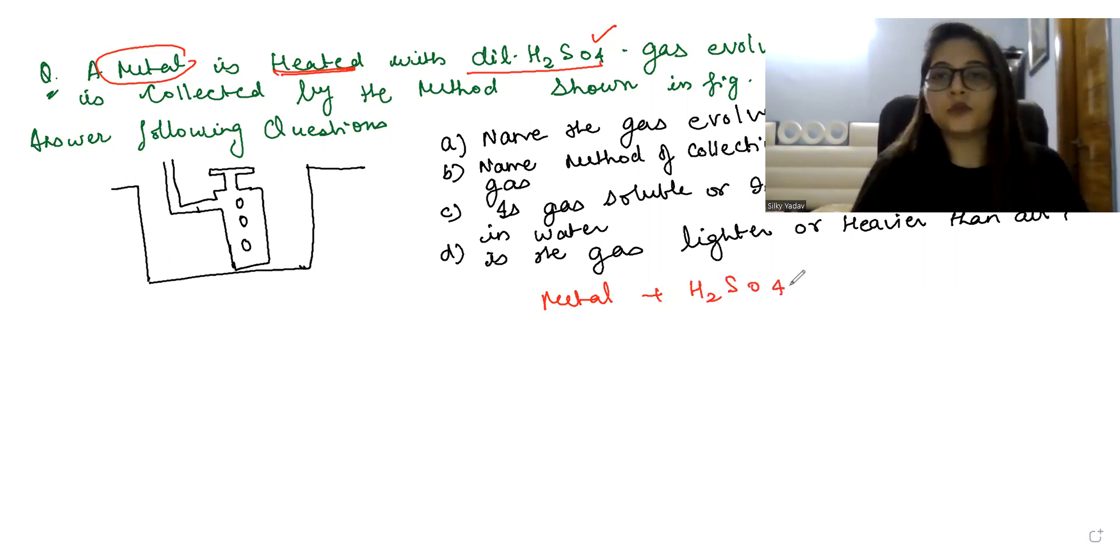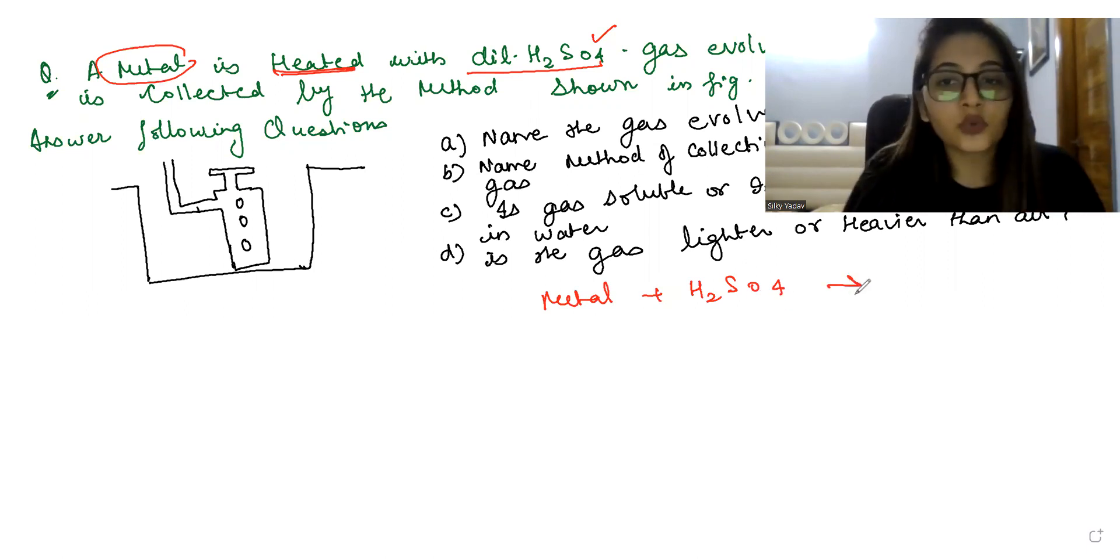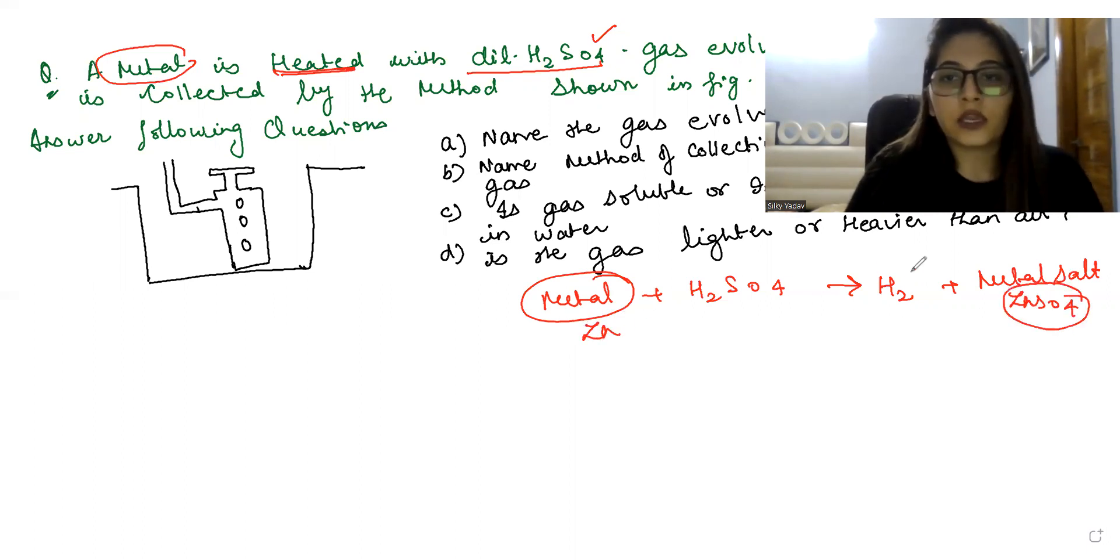If you remember, I've told you all that whenever you're having a metal and placing it in acid, it is always going to give hydrogen gas along with the metal salt. That means you will get, let's say zinc, so you will get ZnSO4 and H2 gas.